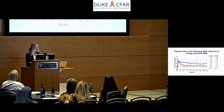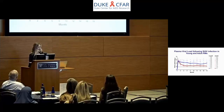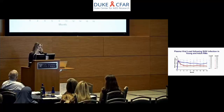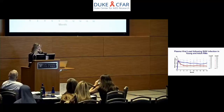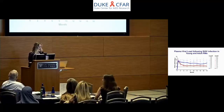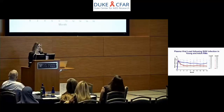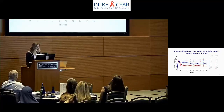Shown on this slide is a graph summarizing plasma viral load following SHIV infection in young and adult macaques. The x-axis is time points in months following infection, and the y-axis is viral load measured as viral RNA copies per milliliter of blood. Each line represents the viral load over time per animal — young macaques in blue and adults in red, with averages shown in darker colors. As you can see, the young macaques maintained a higher viral load over time compared to adults.